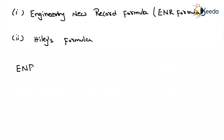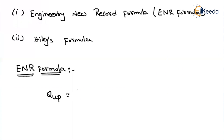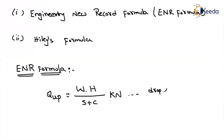The Engineering News Record formula is an empirical method, so we have to memorize the formula along with the corresponding units. According to the ENR formula, the ultimate capacity of a pile is written as W × H divided by (S + C), and you will get the pile capacity in kilonewtons. This formula is applicable for drop hammer and single acting steam hammer.